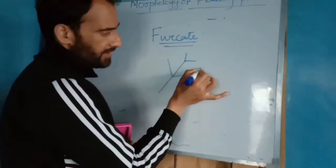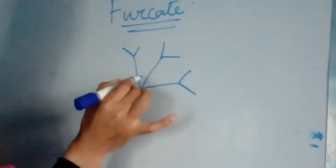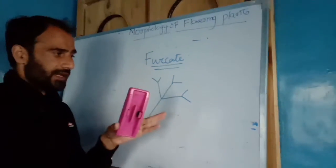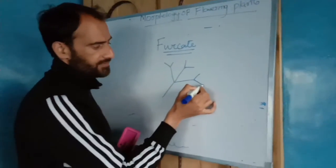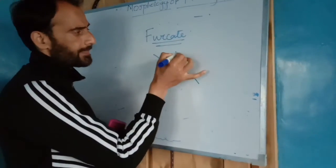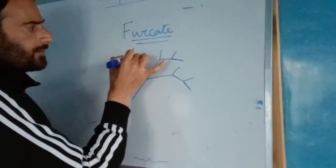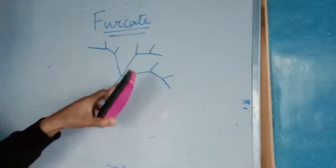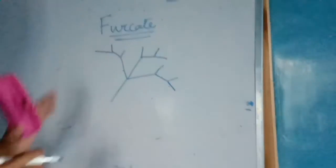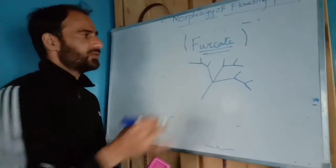Every main vein is divided into two branches only. There may be three or four main veins, but each is further divided into two branches. This is extensive branching, but it is bifurcate — because here we have only two branches at each division.